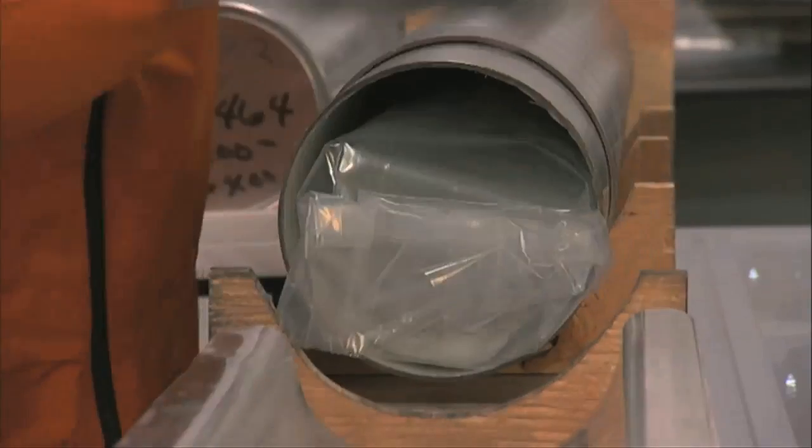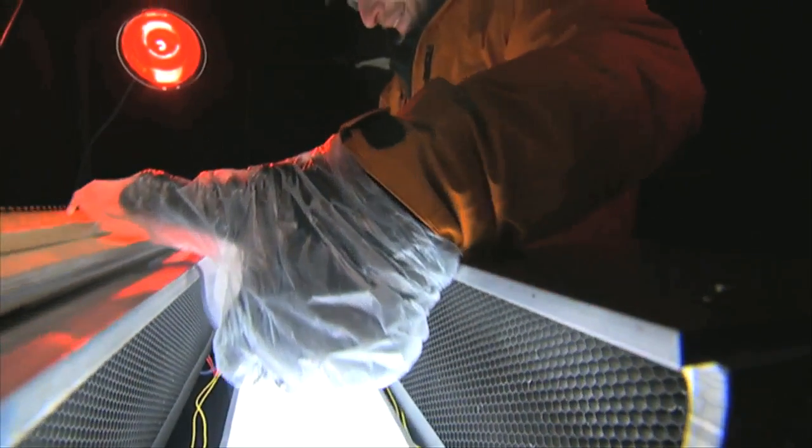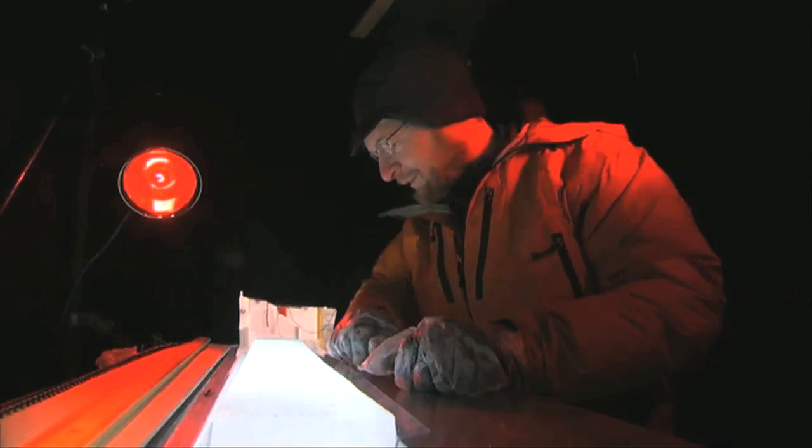Let's see what cores like this can tell us. First are those layers I mentioned in the New Zealand snow. They've turned to ice and we can count them. Summer, winter, summer, winter. Like tree rings, we can date the core.